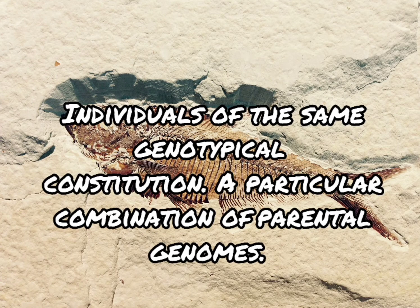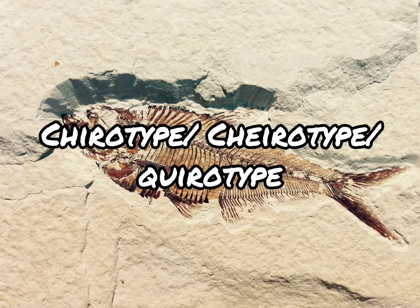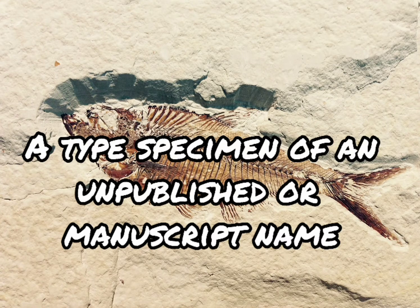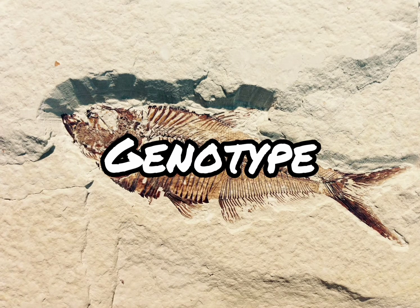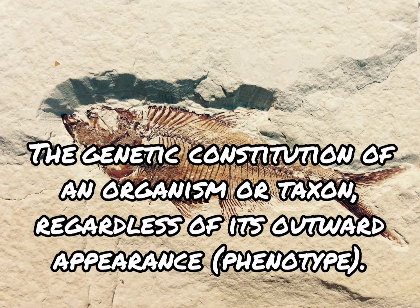Genotype: individuals of the same genotypical constitution, which is due to the particular combination of parental genomes. Chirotype, or Quirotype, is a type specimen of an unpublished or manuscript name. A genotype is the genetic constitution of an organism or taxon, regardless of its outward appearance or phenotype.